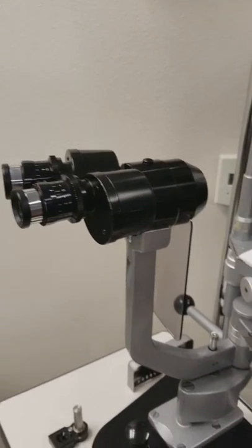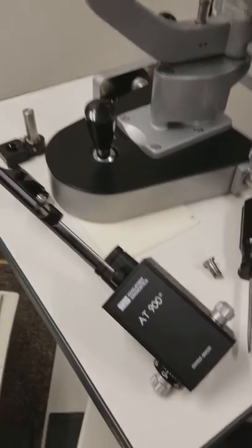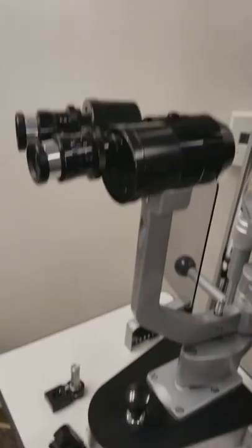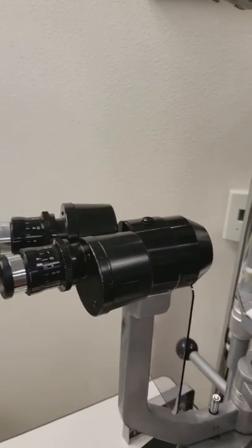This is an instructional video on how to mount an R900 style tonometer to a Haag-Streit style slit lamp.